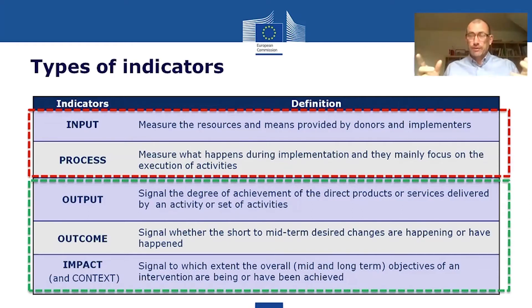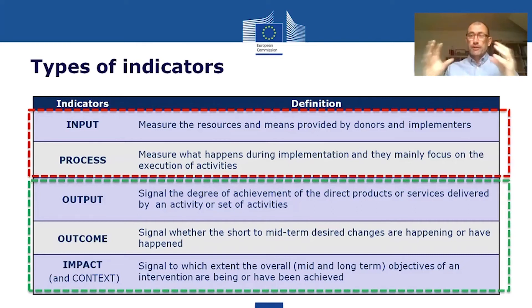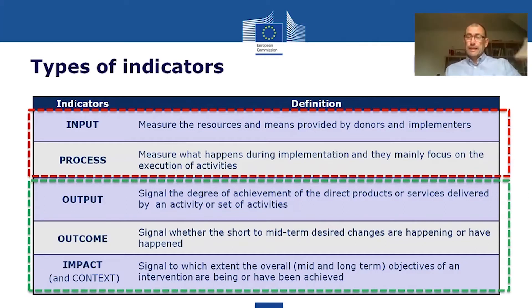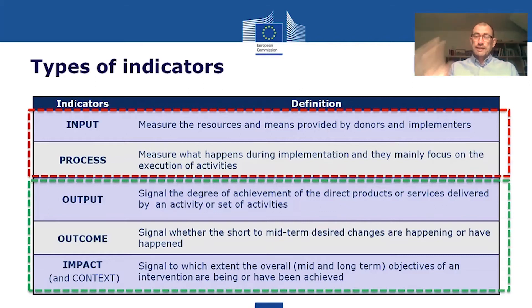I asked how they knew they were on the right track, and they pointed to all the process indicators: they'd signed a contract with the subcontractor, the subcontractor had started building the A&E ward, equipment had been purchased, medical supplies purchased. All of this was ongoing — showing the different processes at work so that, once those processes complete, the output indicator would be fulfilled: hospitals built, operational, taken over and working.